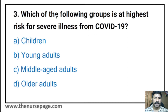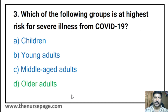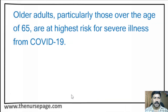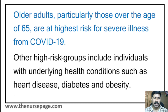Third question: Which of the following groups is at highest risk of severe illness from COVID-19? Children, young adults, middle-aged adults, or older adults? The correct answer is older adults. Older adults, particularly those over the age of 65, are at the highest risk for severe illness from COVID-19. Other high-risk groups include individuals with underlying health conditions such as heart disease, diabetes, and obesity.